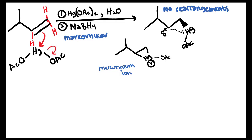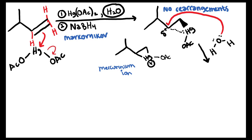Now that we have our mercurinium ion, we'll proceed with the nucleophilic attack. In this example water is going to be our nucleophile, but that can change — sometimes you'll have methanol instead. The water molecule has two lone pairs on the oxygen, and those lone pairs are going to attack the partial positive carbon. Any electrons that the mercury is sharing are going to go back to the mercury.